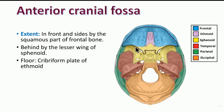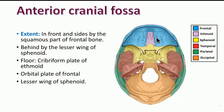The floor of the anterior cranial fossa is formed by three bones: the orbital plate of the frontal bone, as I mentioned; posteriorly, the lesser wing of the sphenoid; and in the midline, the cribriform plate of the ethmoid bone. So these three bones form the floor of the anterior cranial fossa. The two lesser wings are connected posteriorly in the midline by the jugum sphenoidale.